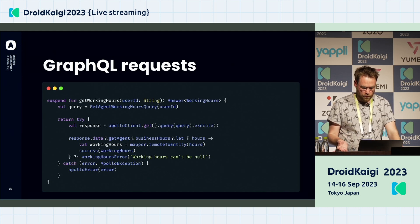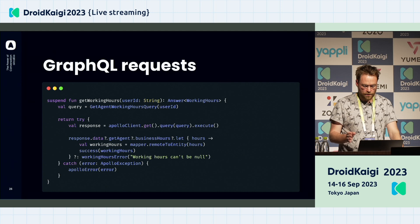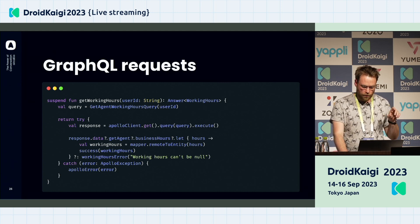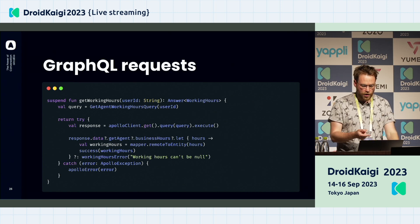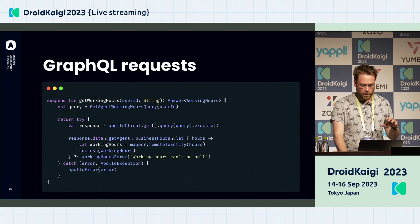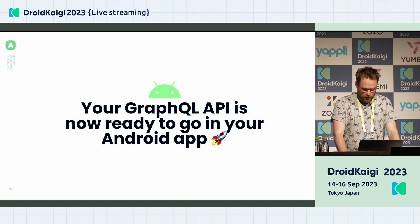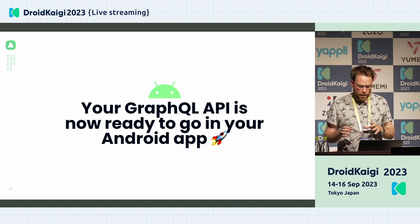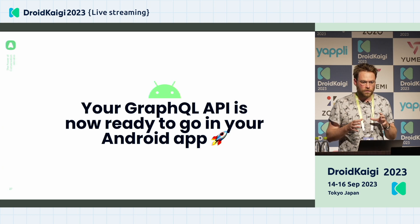To query something defined with the schema, you get your Apollo client, call .query() with the query you want — for example the agent query defined before — and call .execute() to get the data and manipulate it. Very straightforward. You can now use your GraphQL API alongside your REST API inside your application.